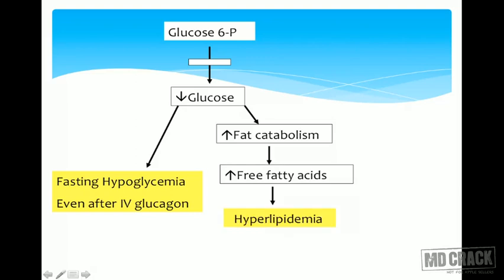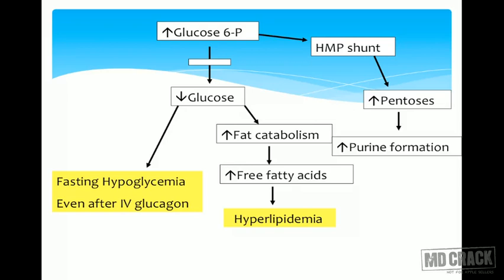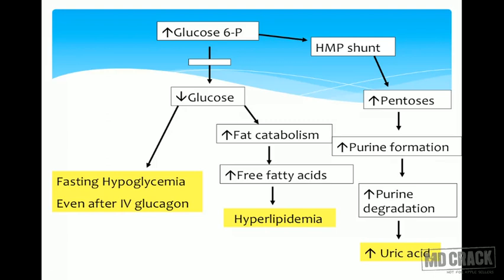Because glucose-6-phosphatase is blocked, glucose-6-phosphate accumulates and is shunted into the HMP (hexose monophosphate) shunt. Since NADPH is adequate, the excess flux produces pentoses, leading to increased purine synthesis, increased purine degradation, and ultimately elevated uric acid — explaining the hyperuricemia seen in Von Gierke's disease.